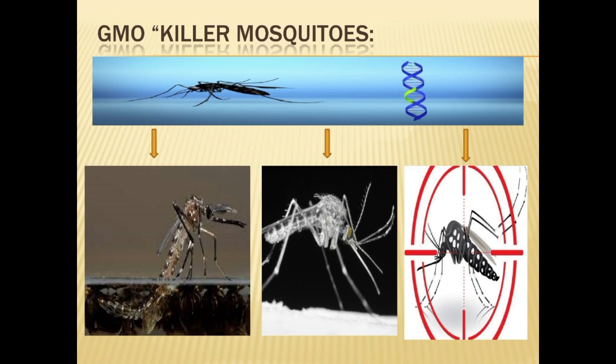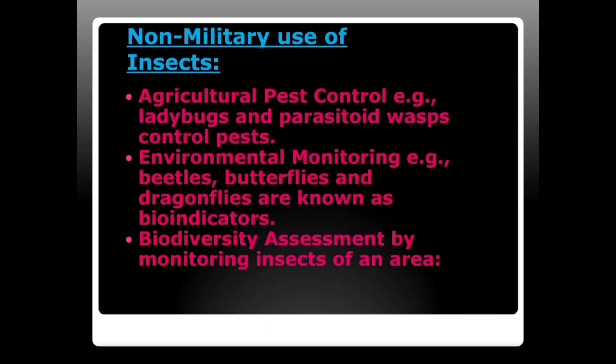There are also non-military uses of insects. For agriculture pest control, insects can be used to monitor agricultural ecosystems — for example, ladybugs and parasitoid wasps are used to control pests in integrated pest management systems, reducing the need for chemical pesticides. Insects also serve as environmental monitors and bioindicators, providing valuable information about ecosystem quality; changes in their abundance or diversity can signal pollution, habitat degradation, or climate change.